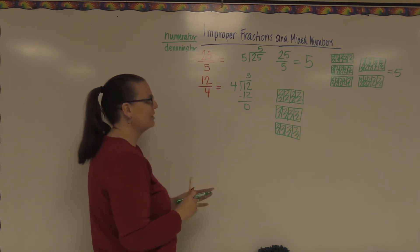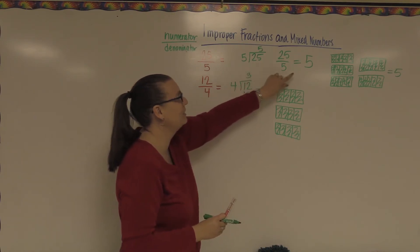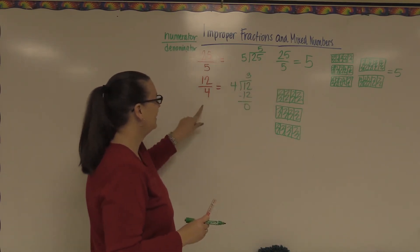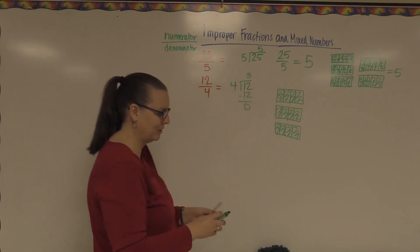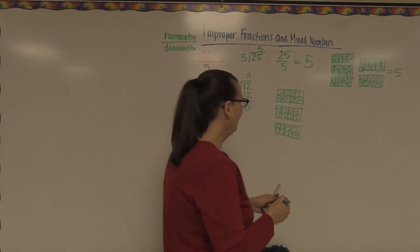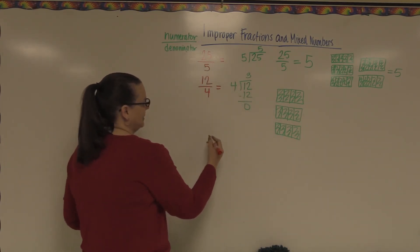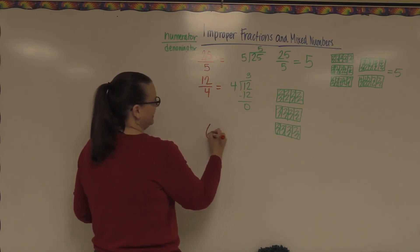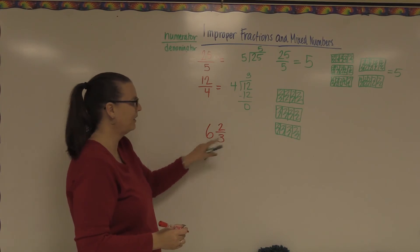So that's part of this. We're going to go the other direction. We learned how to take these improper fractions and turn them into mixed numbers. We are going to take a mixed number now and we're going to turn it into an improper fraction. So if you have a number like, let's say we have 6 and 2/3. This is our whole number and this is our fraction.